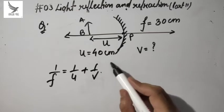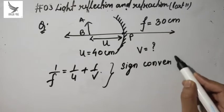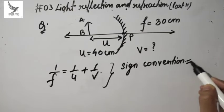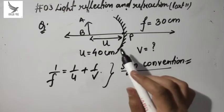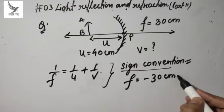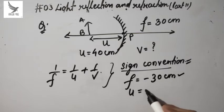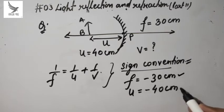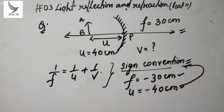Sign convention means knowing what we take as positive and what we take as negative. As I just mentioned, the focal length for a concave mirror must be taken as negative. Also, U will also be negative — why? We will learn this in the sign convention. So before solving these numericals, we must know the sign convention.